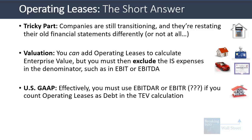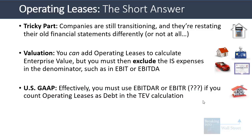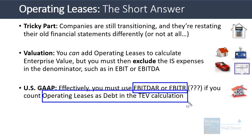Under US GAAP, if you want to add operating leases in the enterprise value calculation, you'll need to use a metric like EBITDAR. Essentially, you have to add back the entire lease or rental expense on the income statement if you are going to count operating leases as debt.